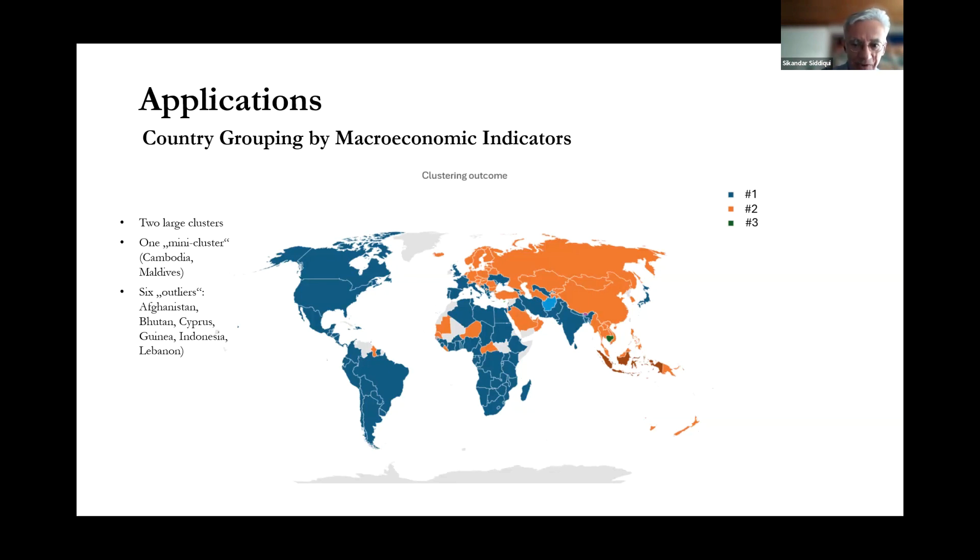Applying the procedure that we've proposed in this context will lead us to the outcome that has been summarized here. Two large clusters, the orange one and the dark blue one, and one mini-cluster being composed only of Cambodia and the Maldives, which is another small cluster consisting only of two observations. And a total of six outliers, six misfits, like Afghanistan, Bhutan, Cyprus, Indonesia, and Lebanon, which the algorithm fails to assign to a group.